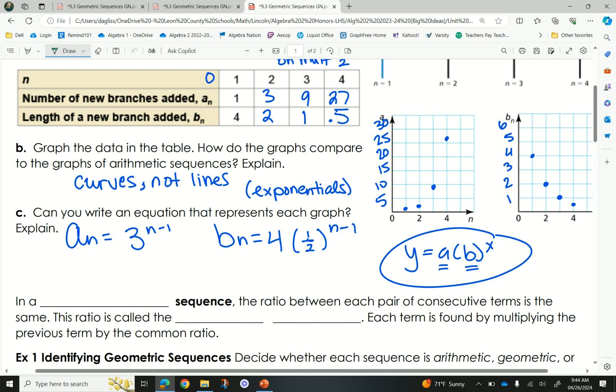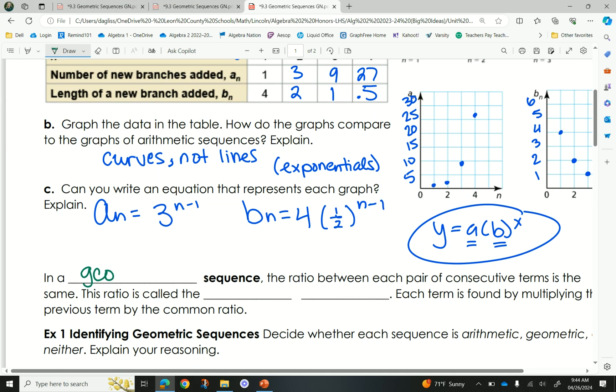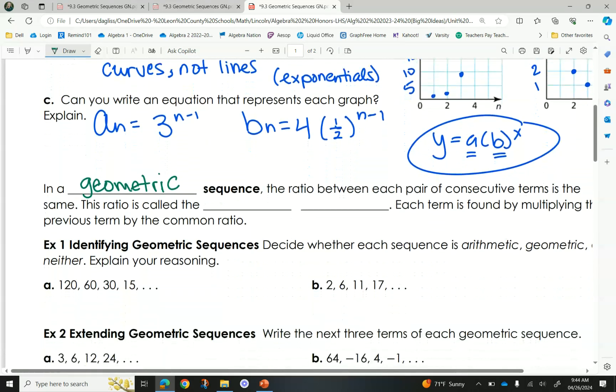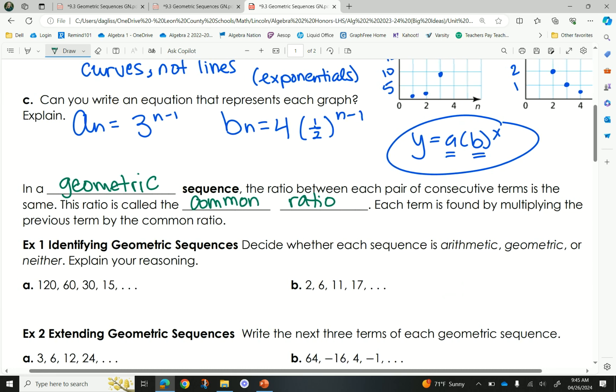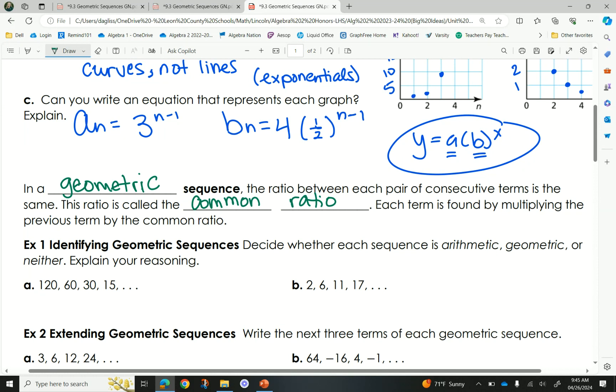So, for today's geometric sequences, we want to stick in the mindset of having, like, an initial value of, like, where we're starting and then how we're moving forward. Okay? So, in a geometric sequence, the ratio between each pair of consecutive terms is the same. This ratio is called the common ratio. Each term is found by multiplying the previous term by the common ratio. So, we are multiplying the whole time. We are not subtracting or adding anymore.